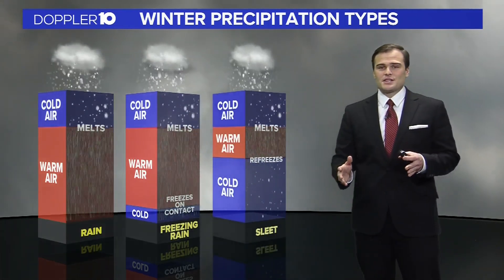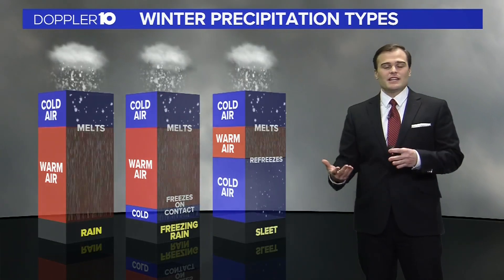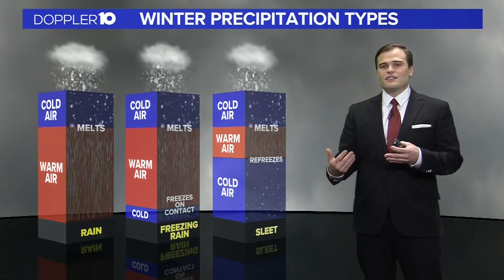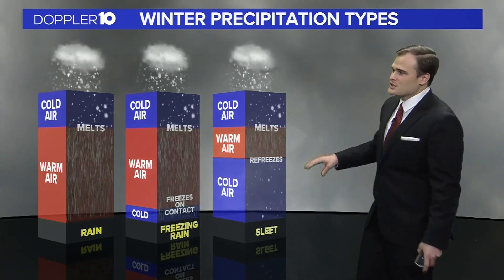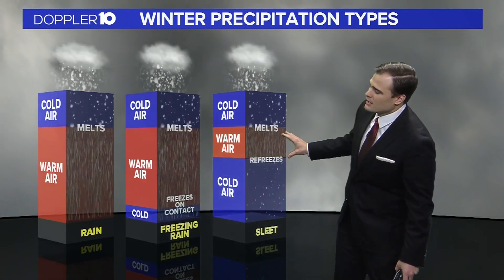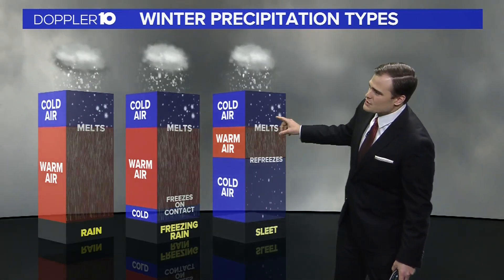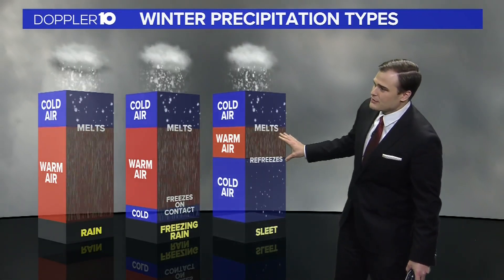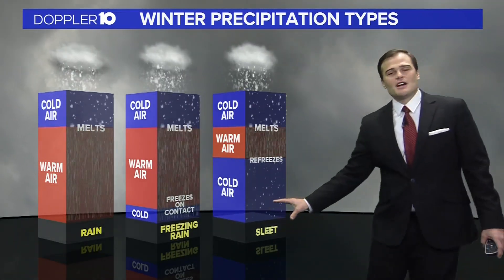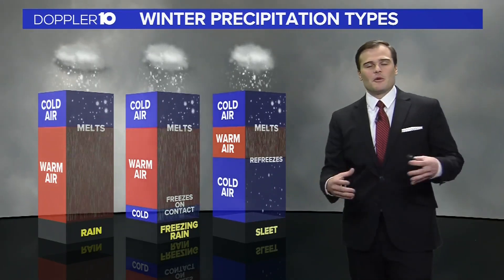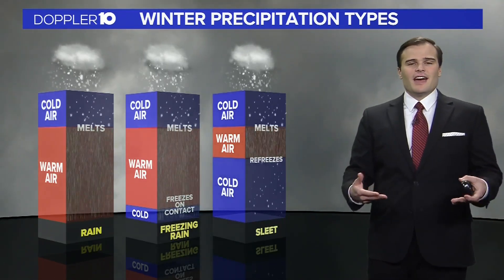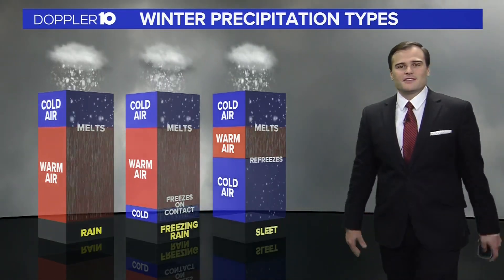Another situation we call sleet. Sleet is similar to snow, but it's actually snow encountering a very warm shallow layer, which melts the snow, but then it falls into another layer of cold air. It refreezes, and that's how we get sleet.